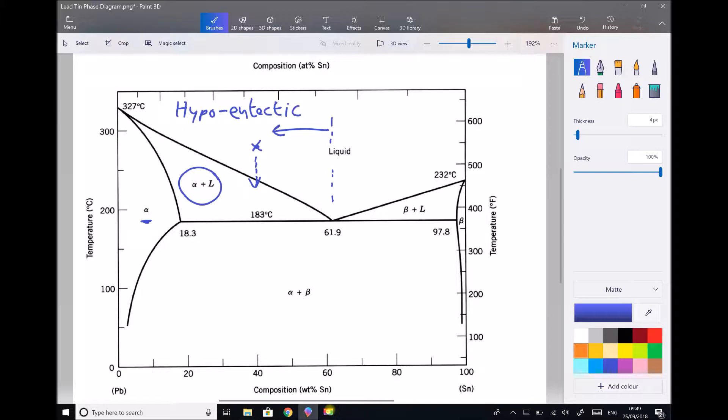Well alpha plus liquid is solid lead rich alpha plus liquid. So what's this telling us? Well what it's telling us is that as we reduce the temperature, alpha is going to start solidifying out, but we're still going to have our liquid phase.